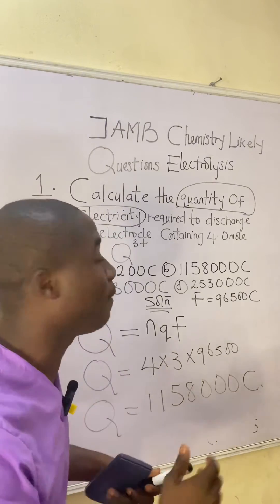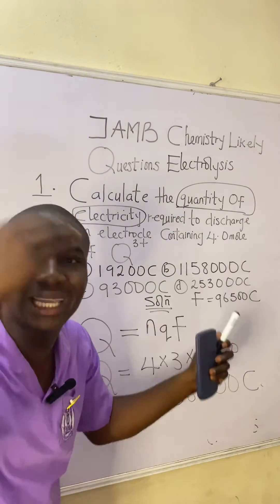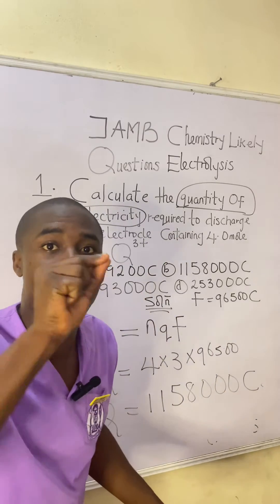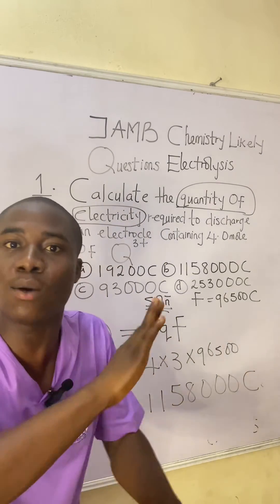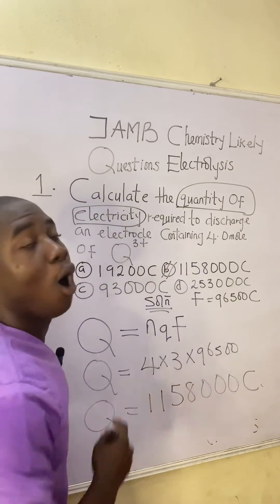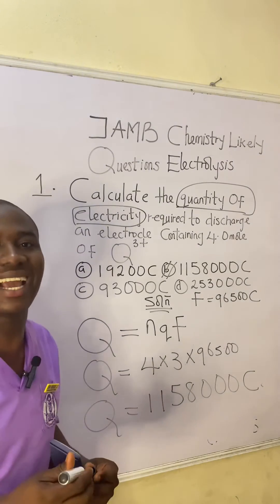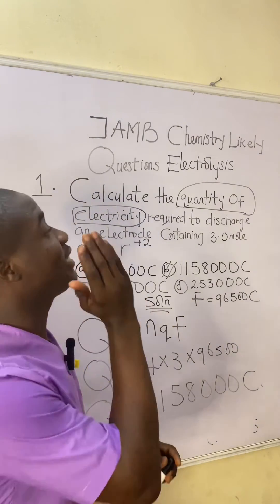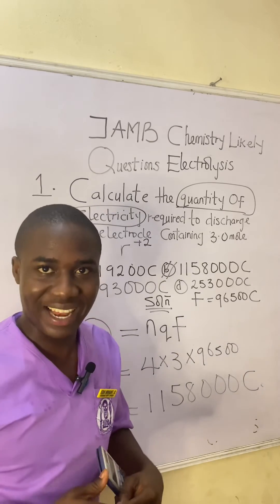This is how you solve questions on quantity of electricity in the JAM exam. When you are given numbers of moles, use the formula Q = nqF to get your answer without stress. The answer to this question is option B. I'll now give you a practice question — solve it and provide your answer in the comment section.